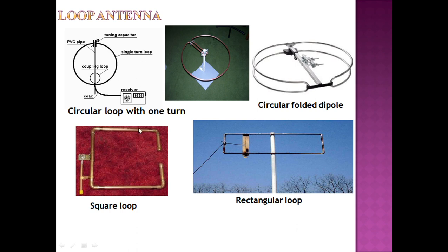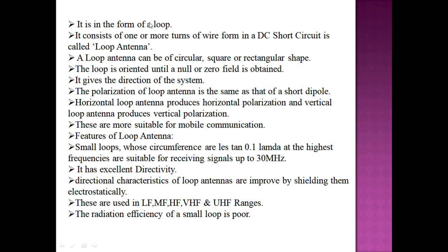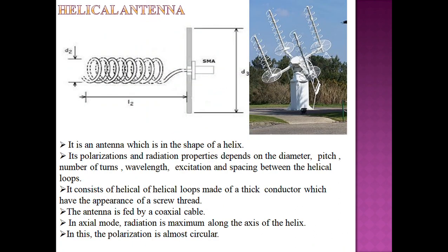This is the loop antenna. There are four types: circular loop, square loop, rectangular loop, and circular folded loop. The loop antenna consists of two wires forming a DC circuit. A vertical loop antenna produces vertical polarization and a horizontal loop produces horizontal polarization. It can be used in LF, MF, HF, and UHF frequency ranges. The radiation efficiency of a small loop is poor if the loop size is very small. It is suitable for mobile communication.